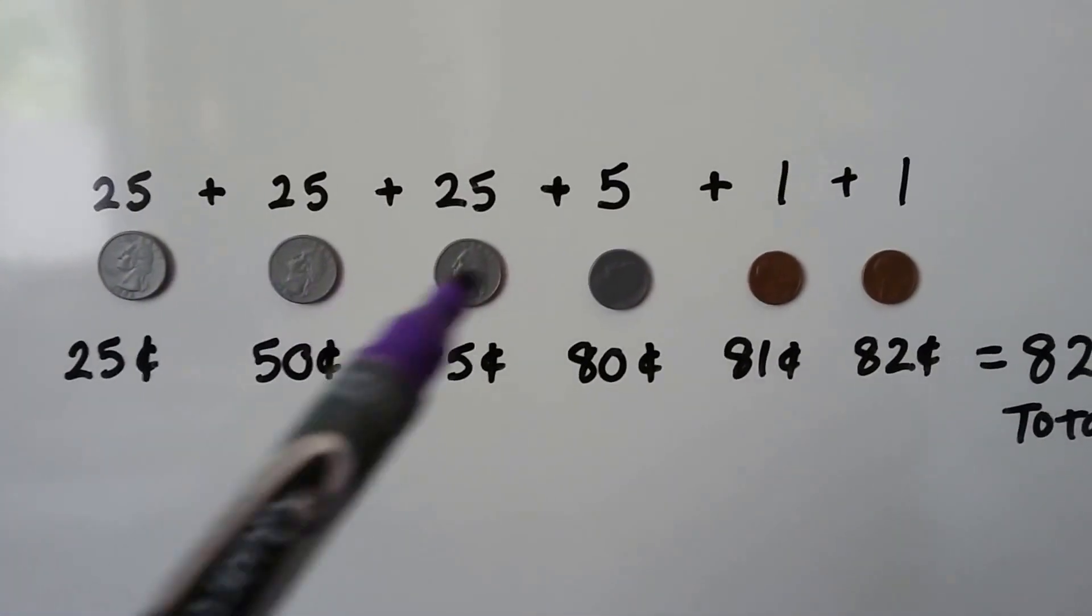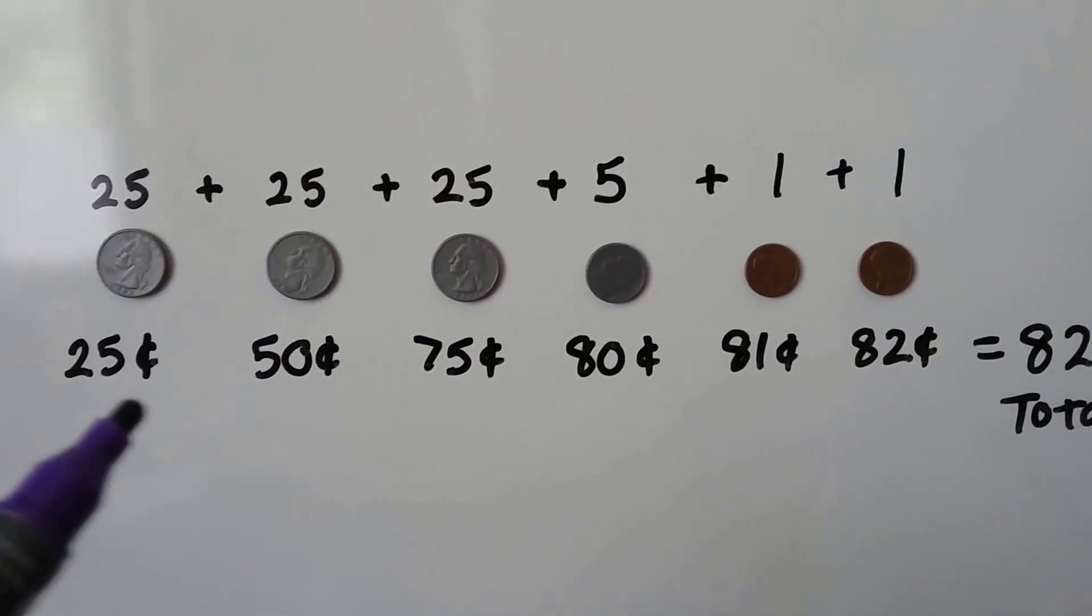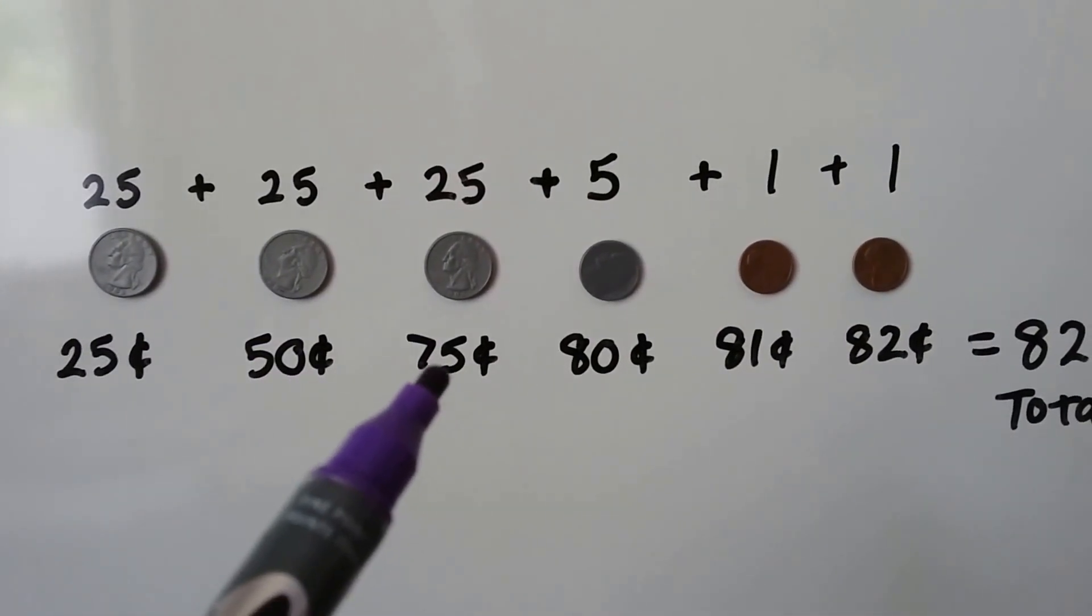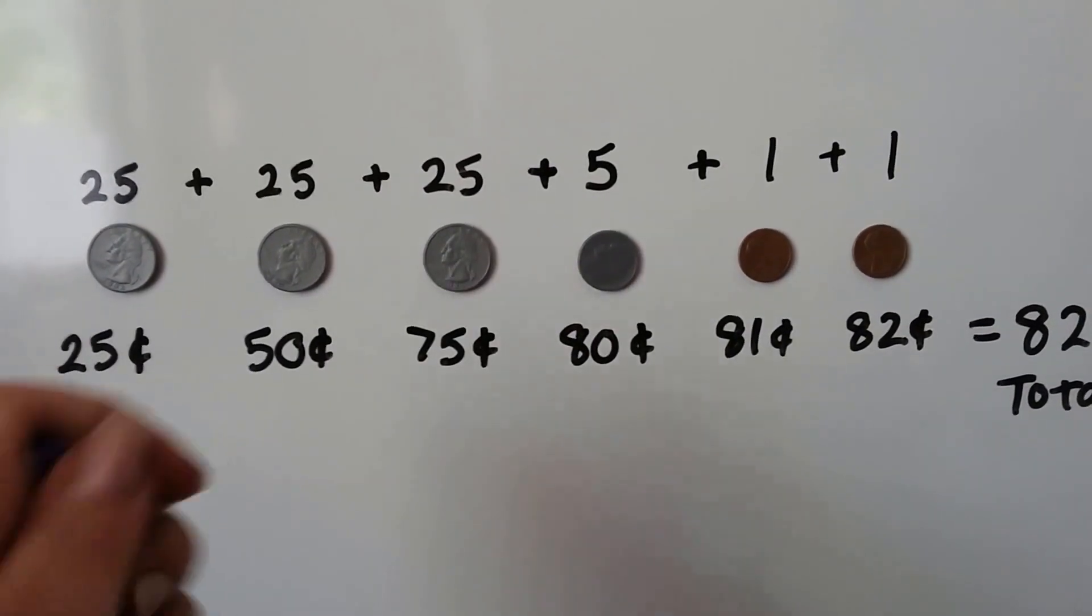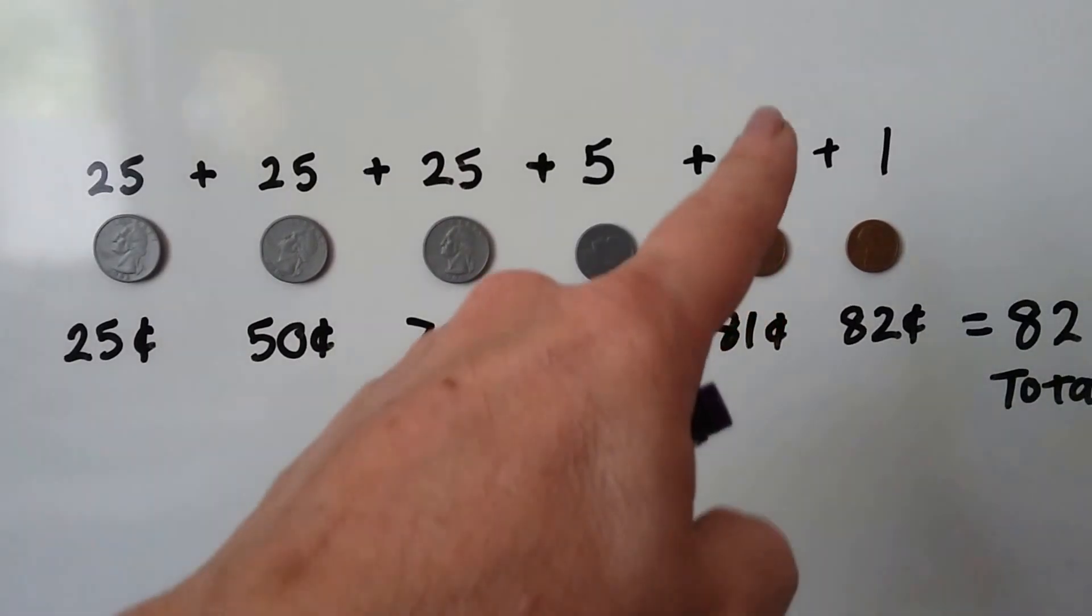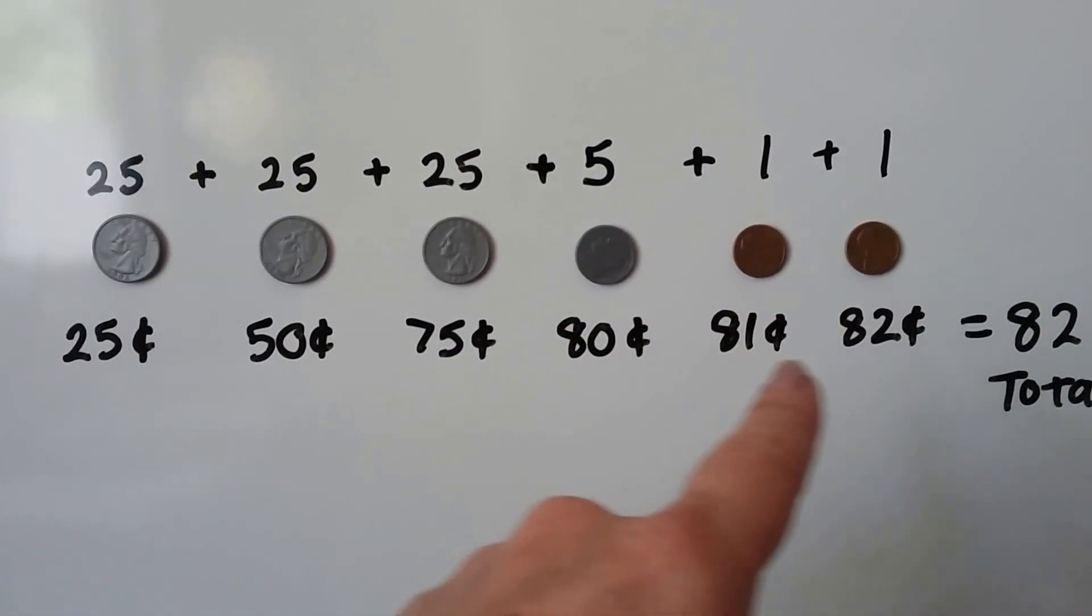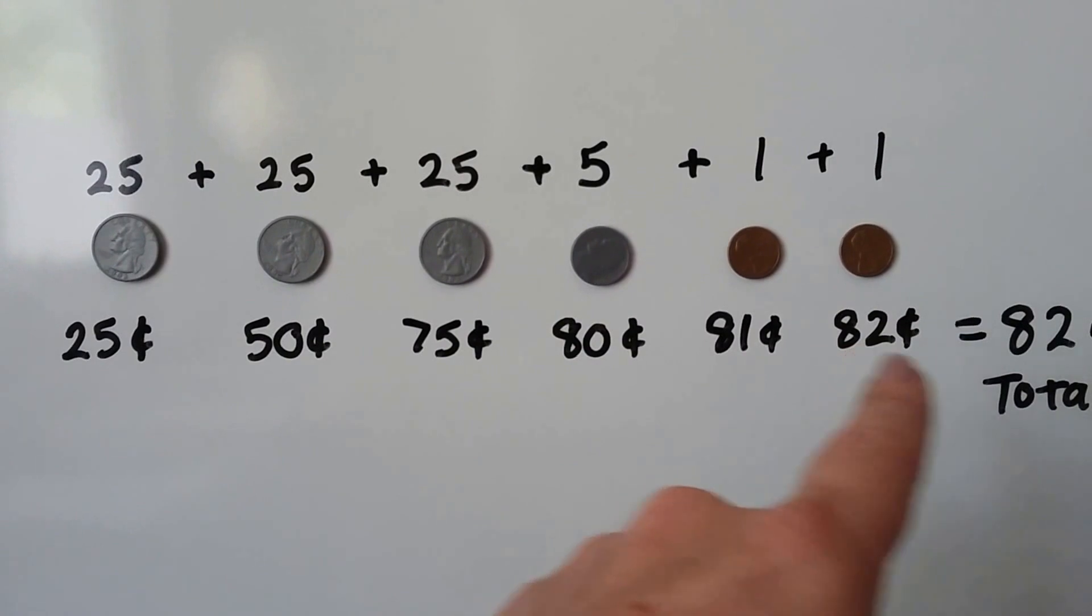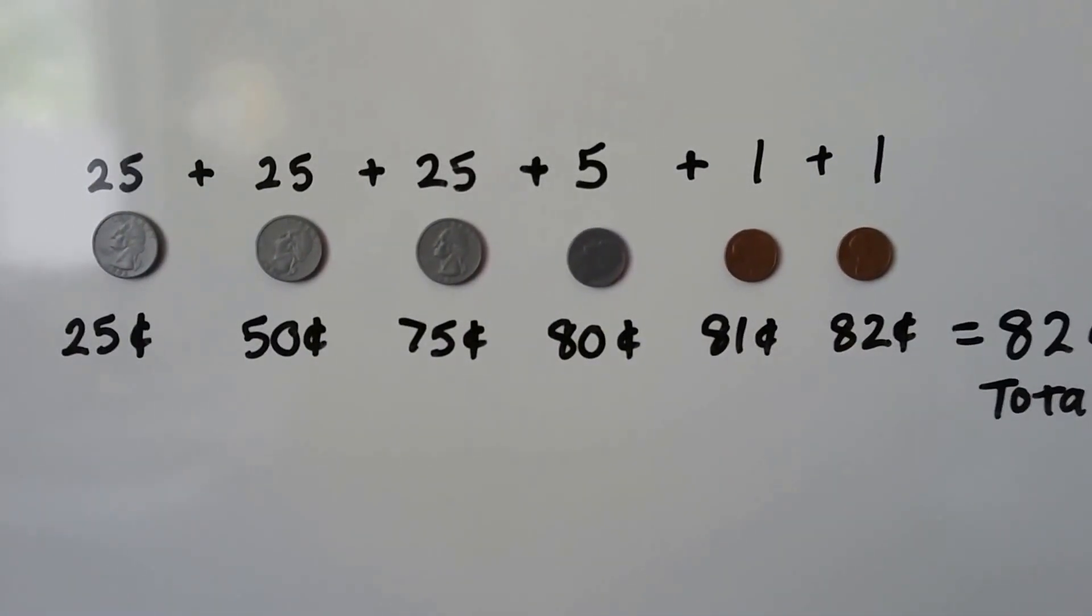Now we have 3 quarters. We say our 25, 50, 75. Now we can add 5. 76, 77, 78, 79, 80. We're at 80. We add one penny. That's 81. We add another one penny. That's 82 cents total.